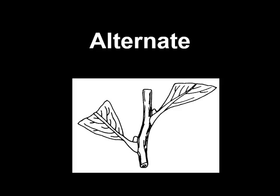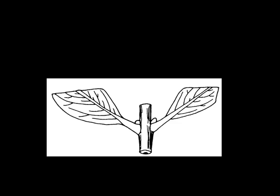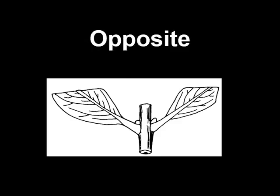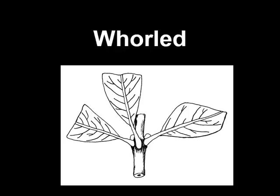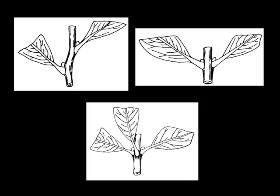Leaf arrangement helps with identification too. Alternate-leaved trees: the points of attachment of the petioles, or leaf stalks, are staggered along the stem — this is an alternate arrangement. Opposite-leaved: two leaves are attached to the stem directly across from each other, and you can see the buds are at the junction of the leaf and the twig. And then there are whorled leaves — this is when three or more leaves are attached to the same point along the stem. The top left is alternate, the top right is opposite, and the center bottom is whorled.